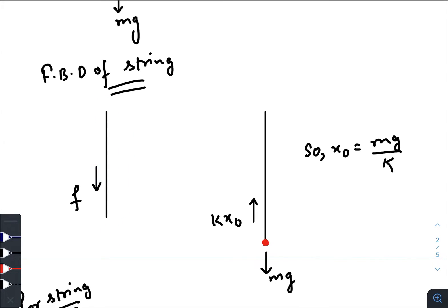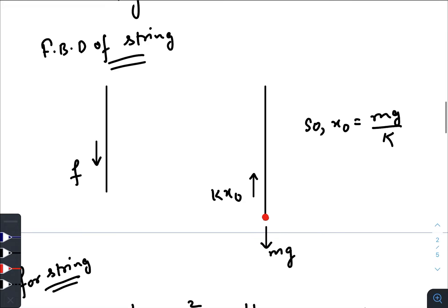If you draw the free body diagram of the string, as the string is massless its own weight is not there. Only the frictional force will act downwards. Now when that mass just reaches the bottommost point of the string, the force applied by the mass on the string is nothing but the frictional force, and that frictional force is equal to MG. MG must equal K times X naught at that instant, so the maximum extension of the string will be MG by K.